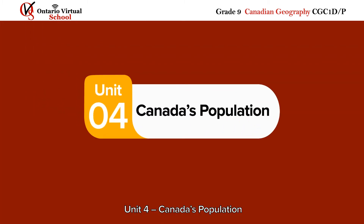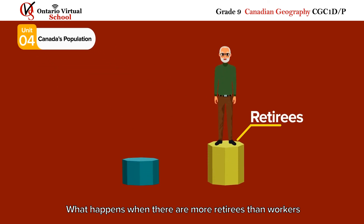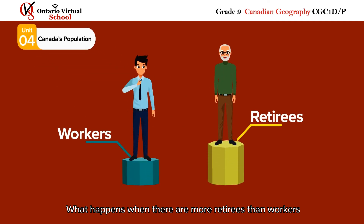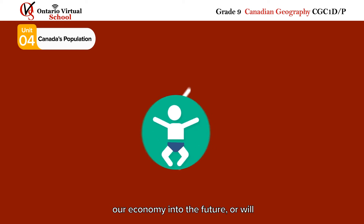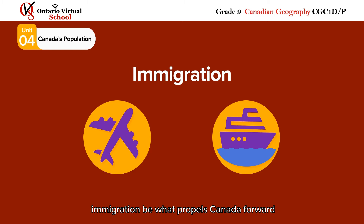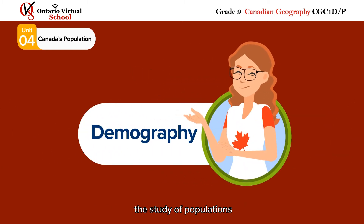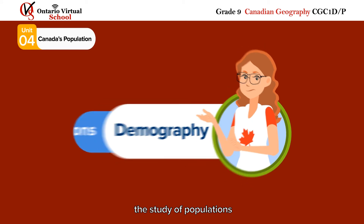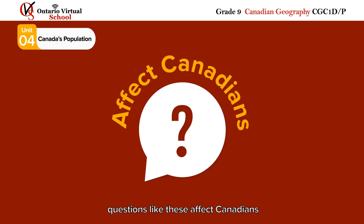Unit 4 – Canada's Population. What happens when there are more retirees than workers? Is our birth rate high enough to sustain our economy into the future? Or will immigration be what propels Canada forward? In this unit, we enter into demography – the study of populations – in order to better understand how questions like these affect Canadians.